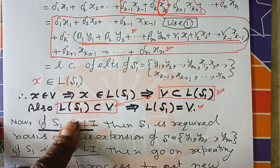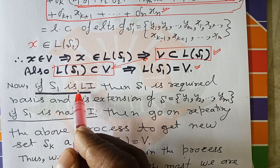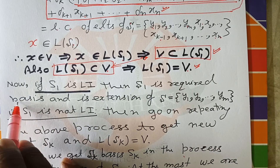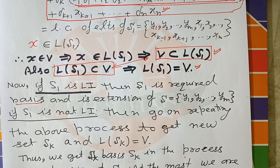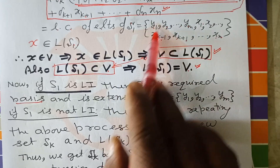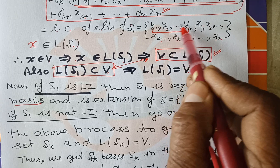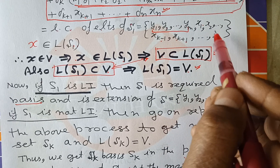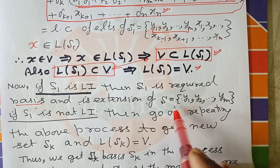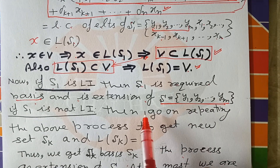So S1 has the power to generate V. Now the logic is: if S1 is LI, then since LS1 = V, S1 is the required basis. And S1, which contains y1, y2, ..., ym along with other elements, is an extension of S. That means the LI set S has been extended to form a basis of V. If S1 is LI, then S1 is a basis and is an extension of LI set S.